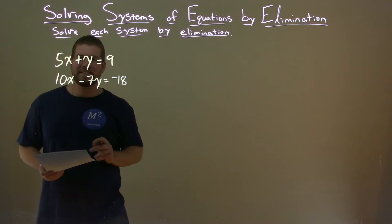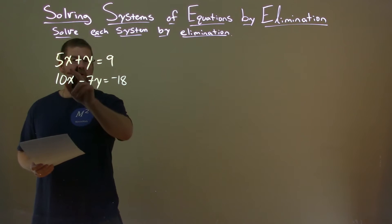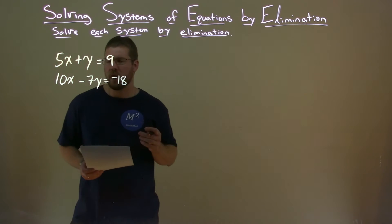But I see 5x and 10x, they're pretty close. 5 multiplied by 2 is 10, we're on our way there.